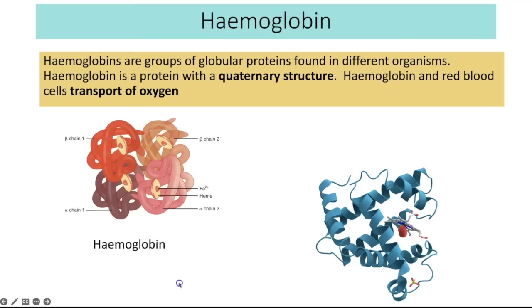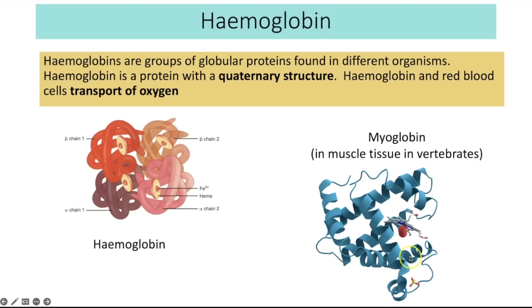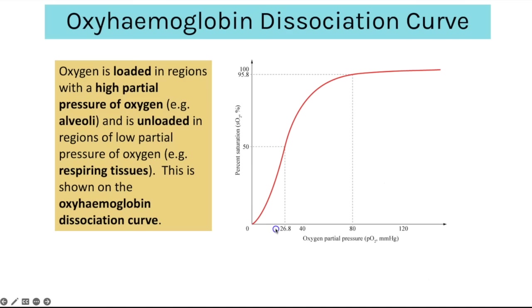Haemoglobins are a group of globular proteins that many different organisms have. This protein is a quaternary structure made up of four polypeptide chains and is responsible for transporting oxygen. Some organisms also have myoglobin, made up of one polypeptide chain, often found in muscle tissues in vertebrates. An oxyhaemoglobin dissociation curve shows the percentage saturation of haemoglobin with oxygen against different partial pressures of oxygen.